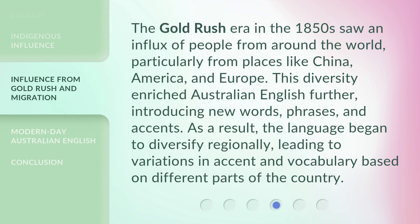The gold rush era in the 1850s saw an influx of people from around the world, particularly from places like China, America, and Europe. This diversity enriched Australian English further, introducing new words, phrases, and accents. As a result, the language began to diversify regionally, leading to variations in accent and vocabulary based on different parts of the country.